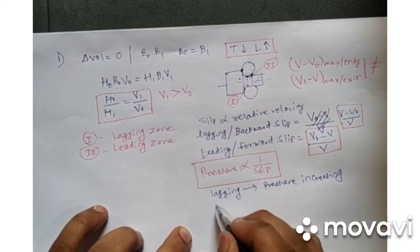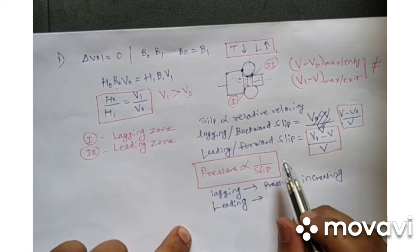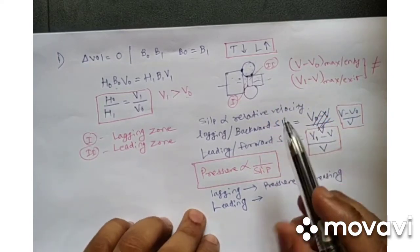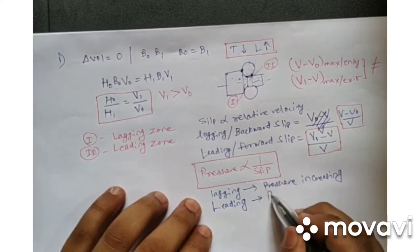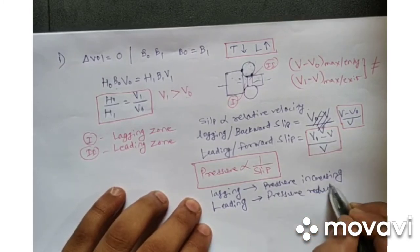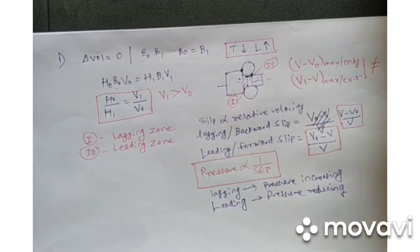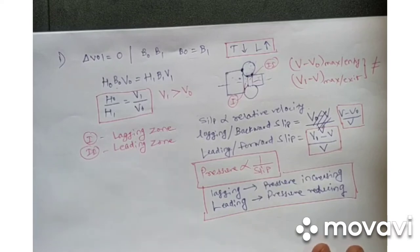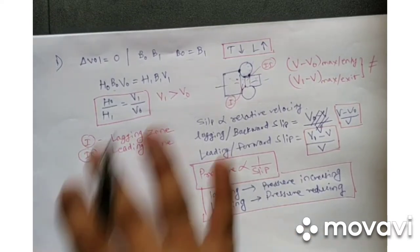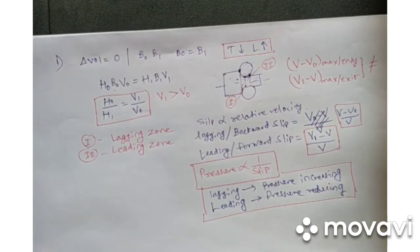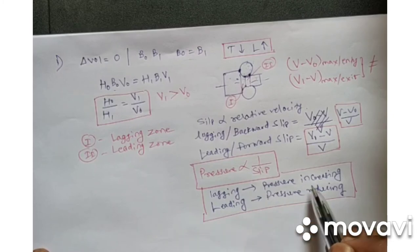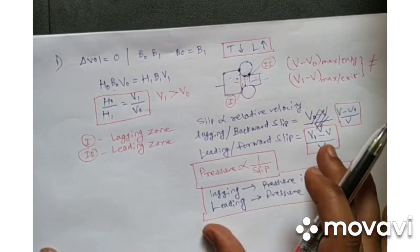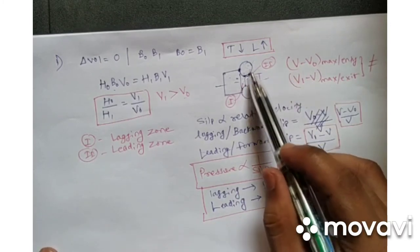In the leading zone, the slip is increasing and because of that the pressure is reducing. So in the lagging zone pressure increases, and in the leading zone pressure decreases. The key is to focus on the velocities in the three zones and understand how area reduction drives velocity increase, which drives slip, which drives pressure variation.